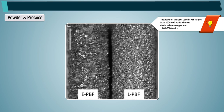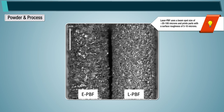The power of the laser used in powder bed fusion ranges from 200 to 1000 watts, whereas electron beam ranges from 1000 to 6000 watts. The higher power of the electron beam can melt the metal powder faster, but results in lower resolution and higher surface roughness. Laser powder bed fusion uses a beam spot size of 20 to 100 microns and prints parts with a surface roughness of 5 to 10 microns, while electron beam powder bed fusion typically uses 100 to 200 microns beam diameter and produces parts with a surface roughness of 20 to 25 microns.